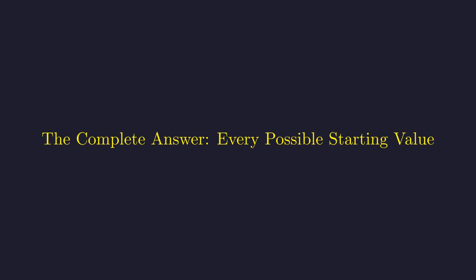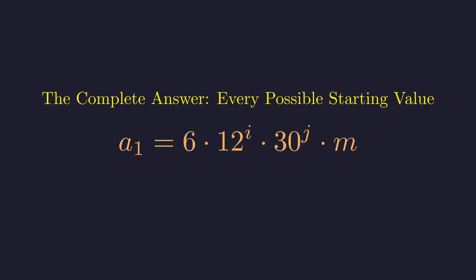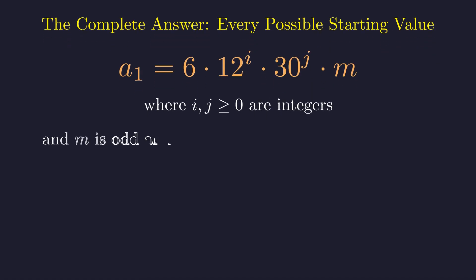We can now state the complete characterization of all possible values for A1. Any possible value for A1 must be of the form 6 times 12^i times 30^j times m, where i and j are non-negative integers, and m is a positive integer such that the greatest common divisor of m and 10 is 1. This means m is not divisible by 2 or 5.